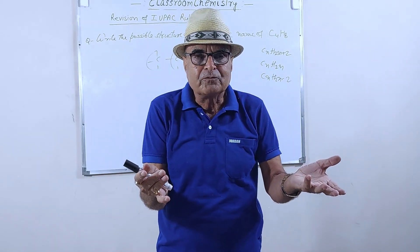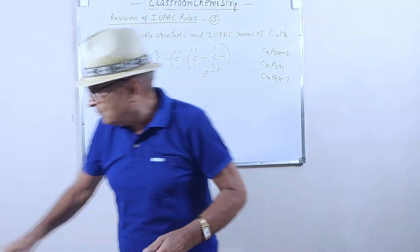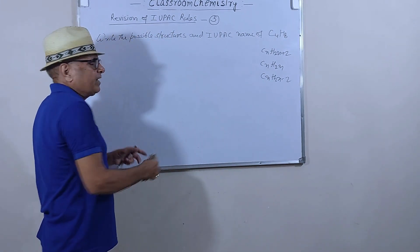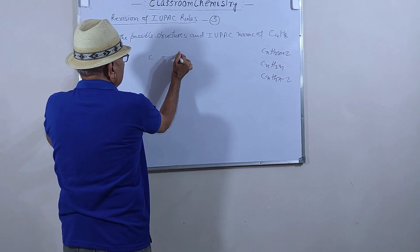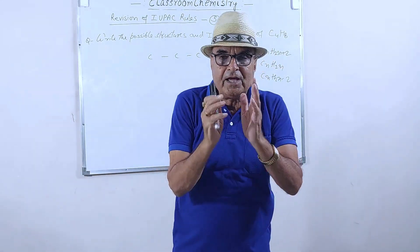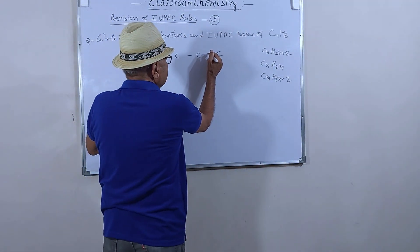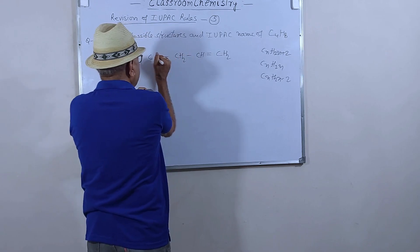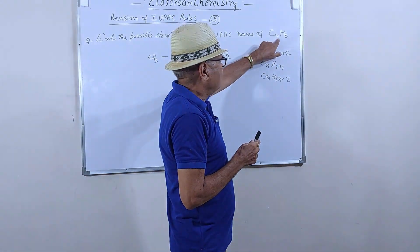The structure will decide whether it is but-1-ene or but-2-ene. Now let's write the different structures. There are 4 carbons, numbered 1, 2, 3, and 4. There will be one double bond in the longest chain. You can place the double bond between carbon 1 and 2, giving: CH2=CH-CH2-CH3. This is the first structural formula for this molecular formula.